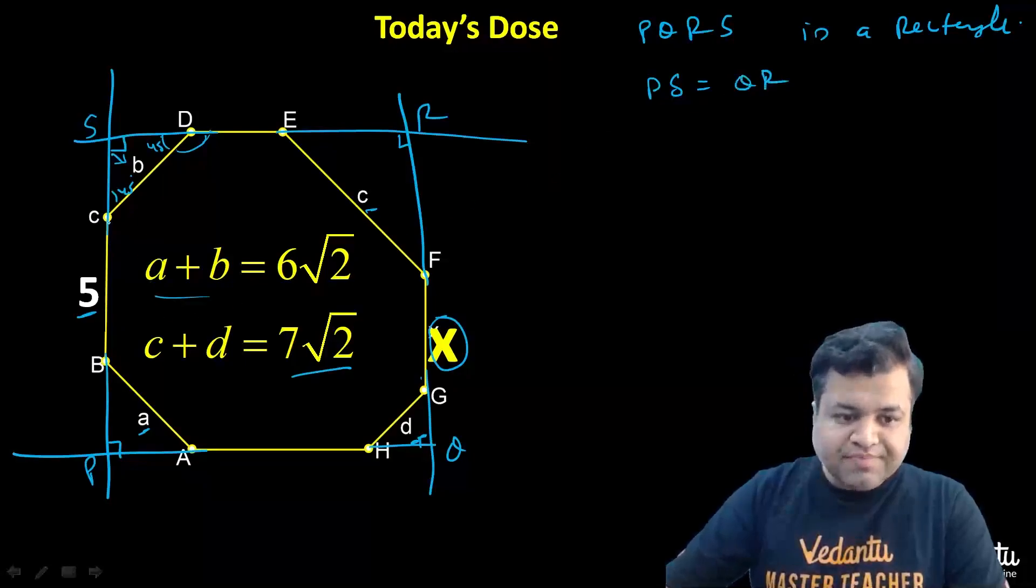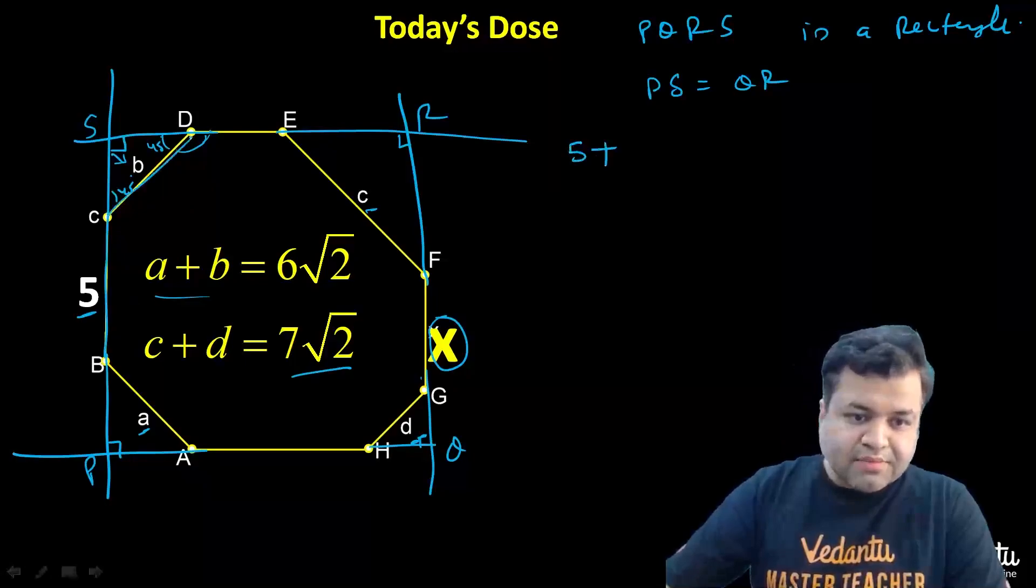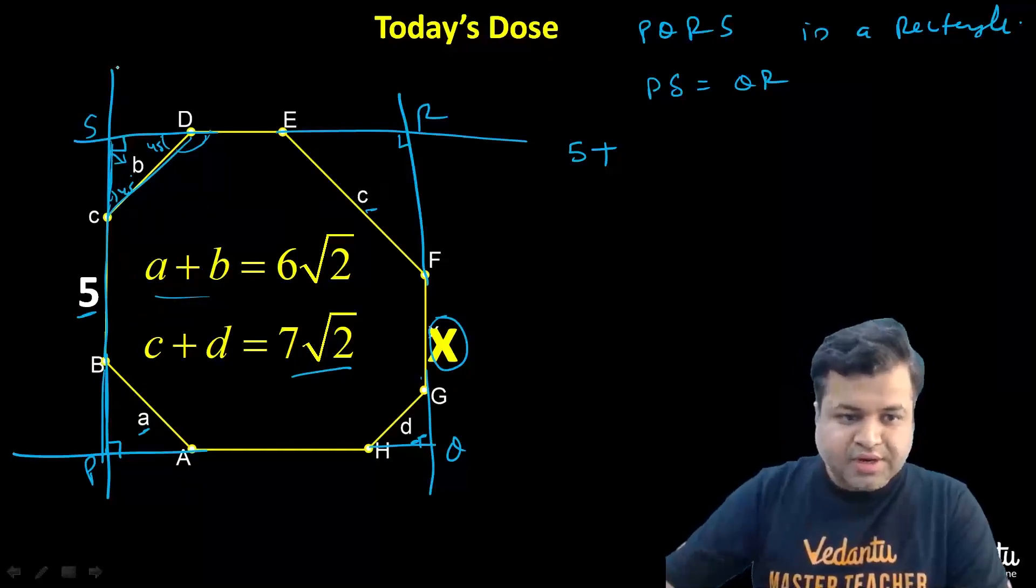So if we write PS, PS will be... PB will be A upon root 2. PS that will be clearly P upon root 2.